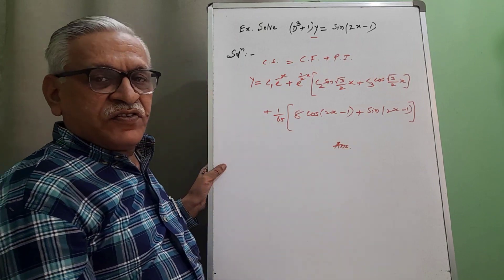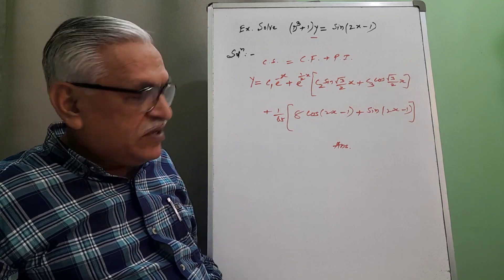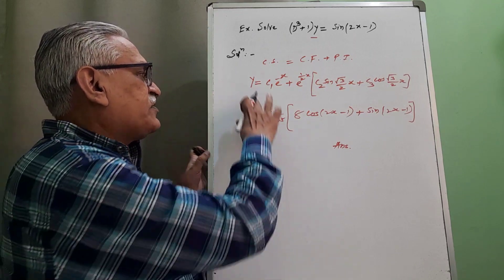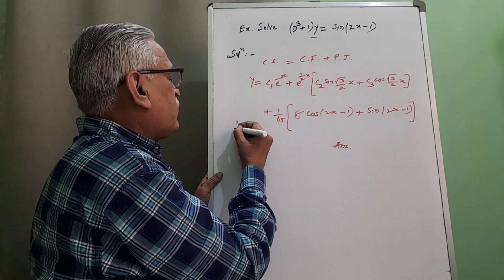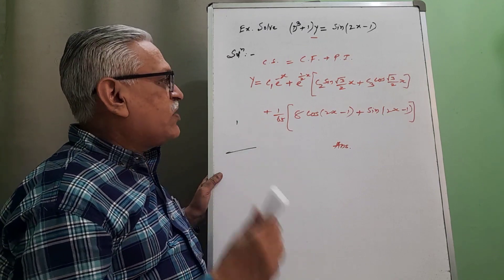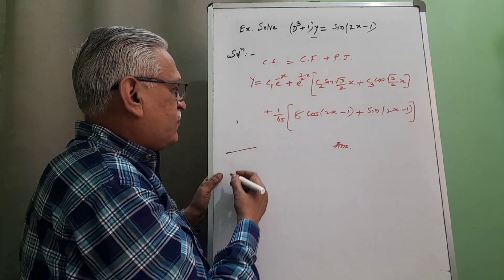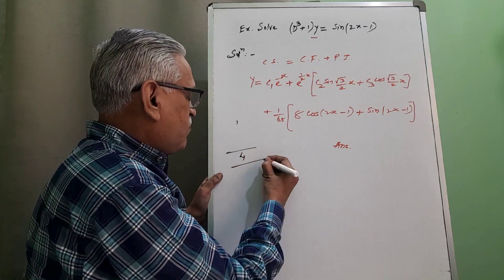And if we have this correct one, if this step is correct, then you will get 1 mark. And therefore if we take the addition of all this, 1 mark for the CF, 2 marks for PI, and this 1 mark for the final answer, total 4 marks.